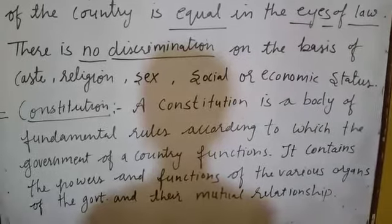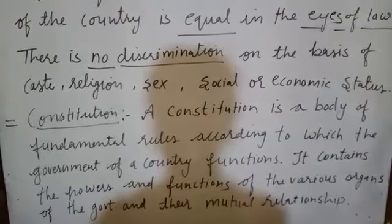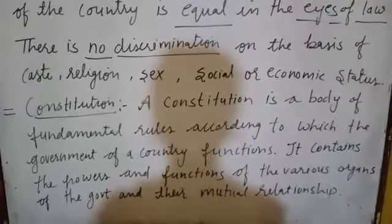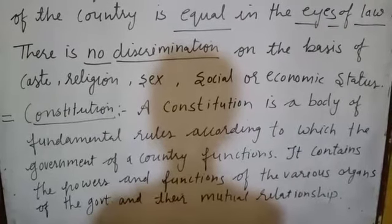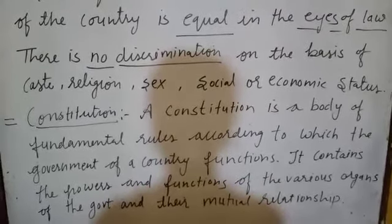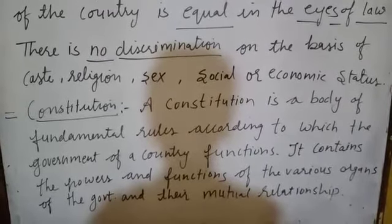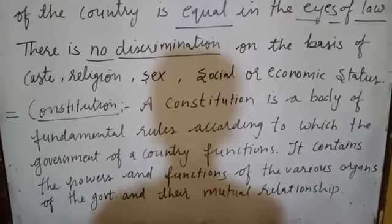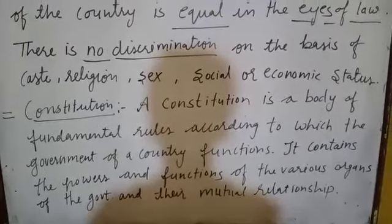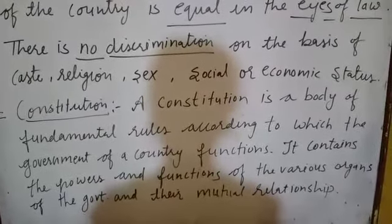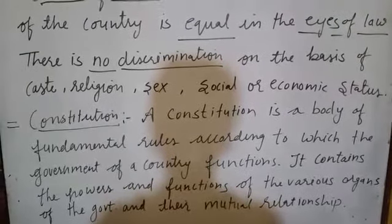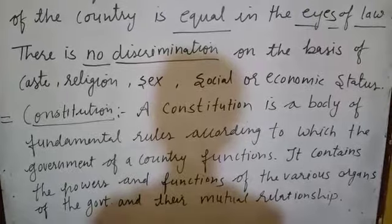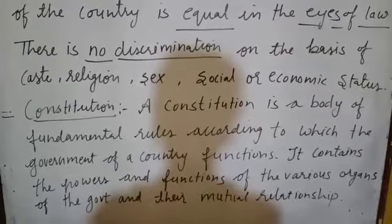The constitution contains the powers and functions of various organs of the government and their mutual relationship. The various organs of government — like the legislature, executive, and judiciary — have different powers and functions. It also defines the rights of citizens and the relationship between the government and its citizens. Whatever rights we have, like the 6 fundamental rights, are given by the constitution. That is why the constitution is very important for our country, because it provides equal rights to all people.